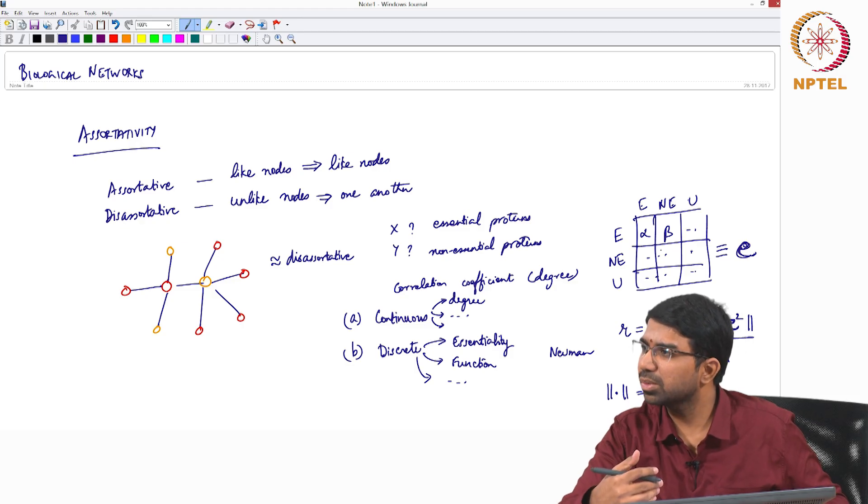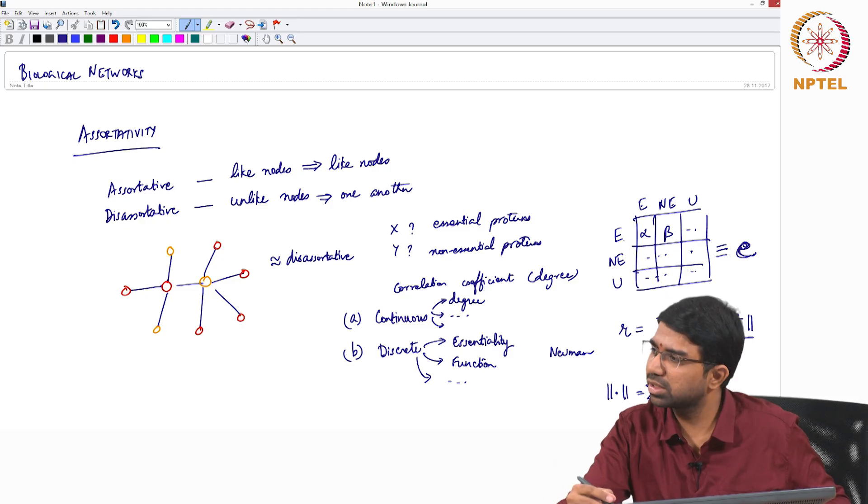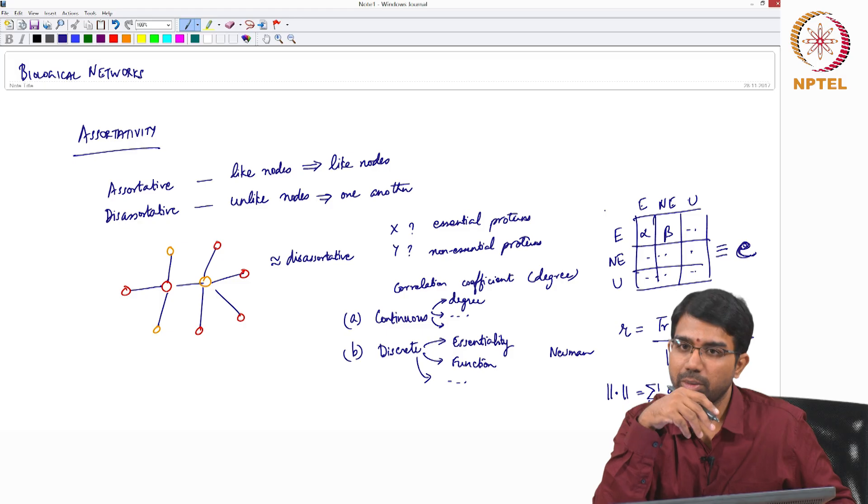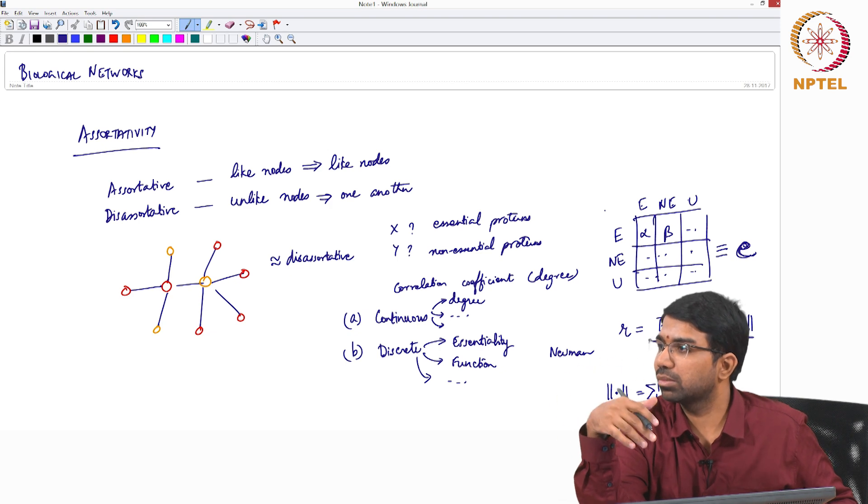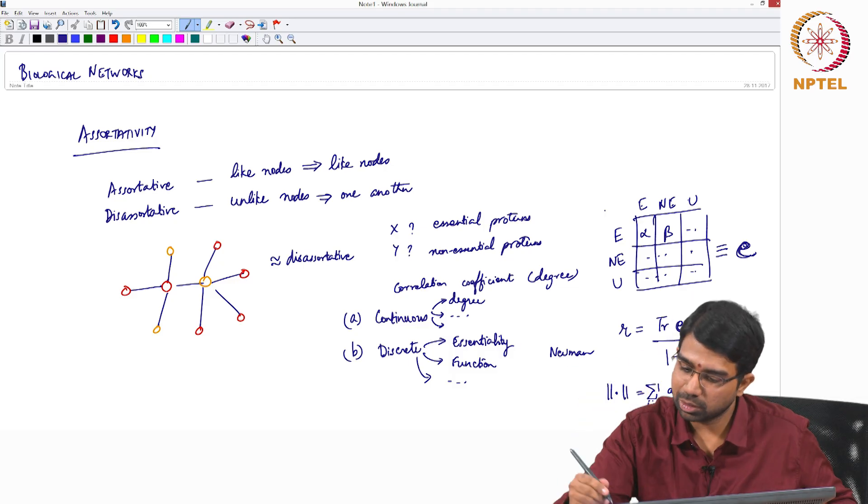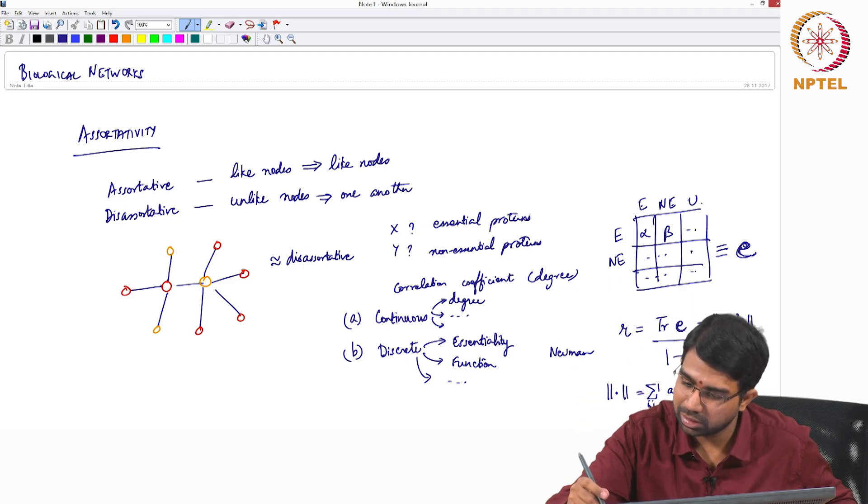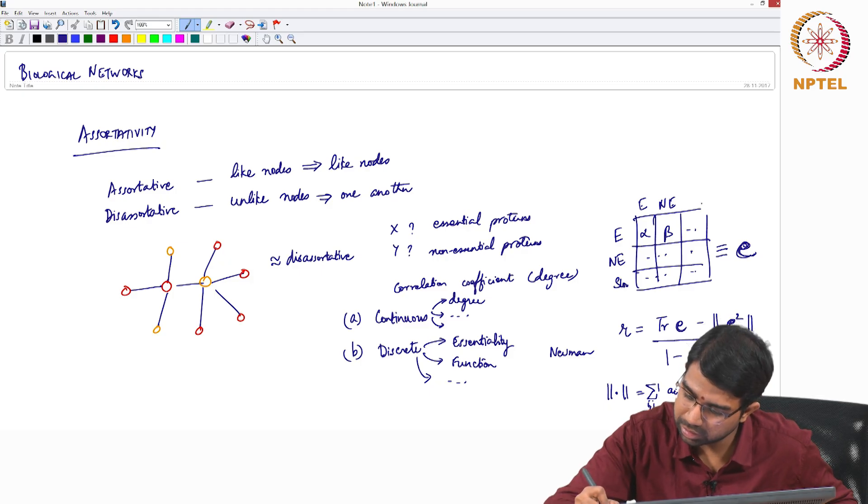By just counting in the network, I can count how many edges go from E to E, how many edges go from E to NE, E to U and so on. If you go back to the previous graph that we had, the protein network, how many are green to green, green to red, red to yellow and so on. We had 4 classes there, slow as well, so maybe that is a more interesting class to have here. So essential, non-essential, slow, fraction.